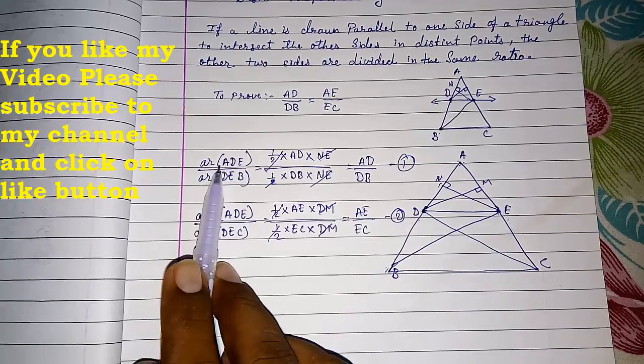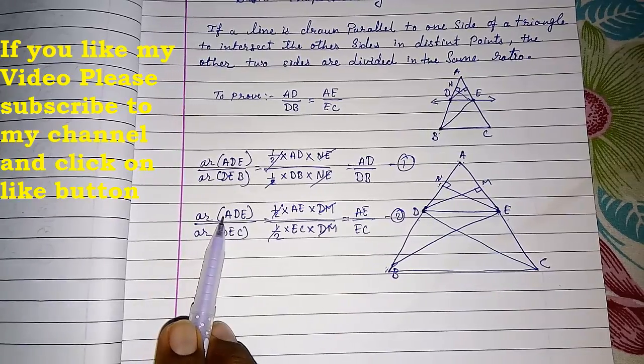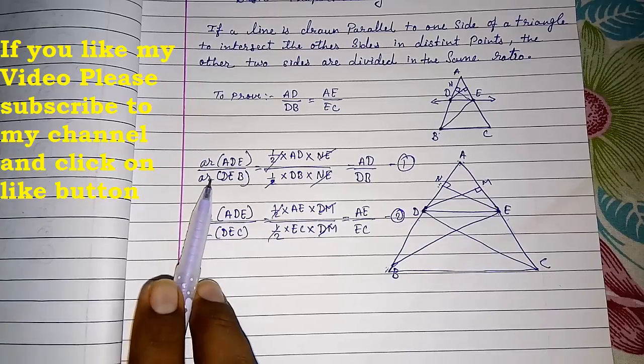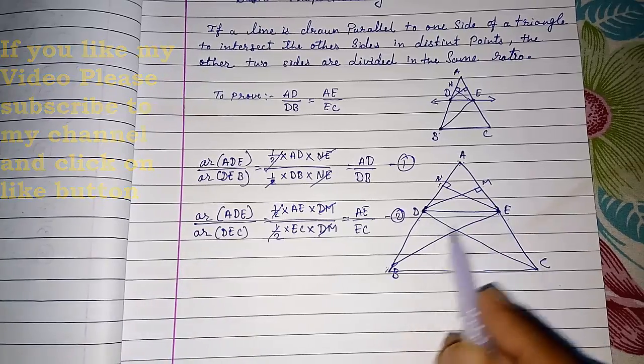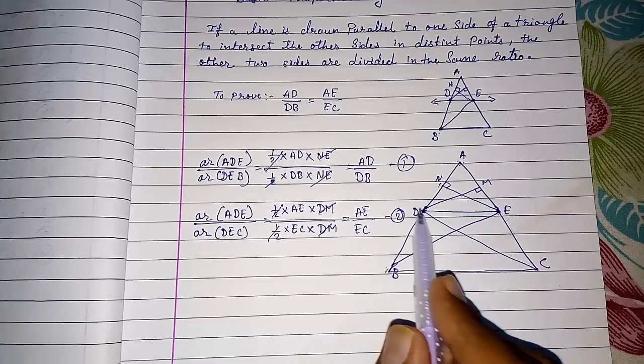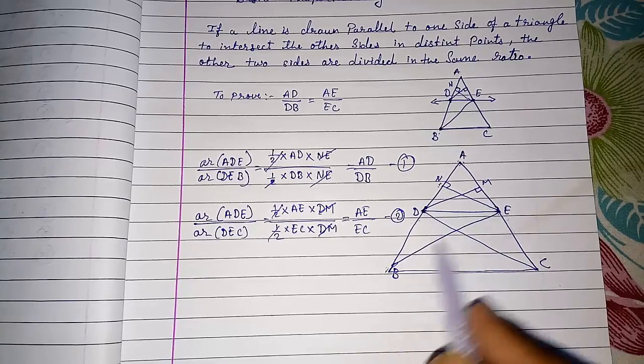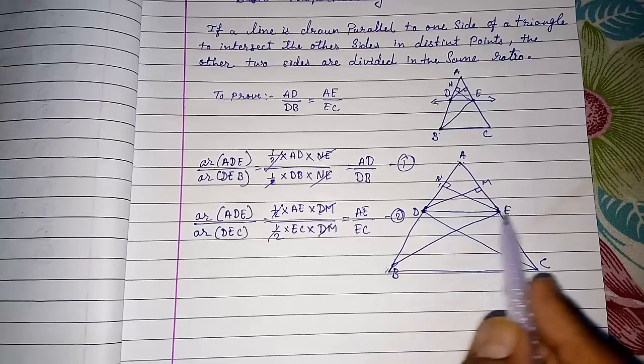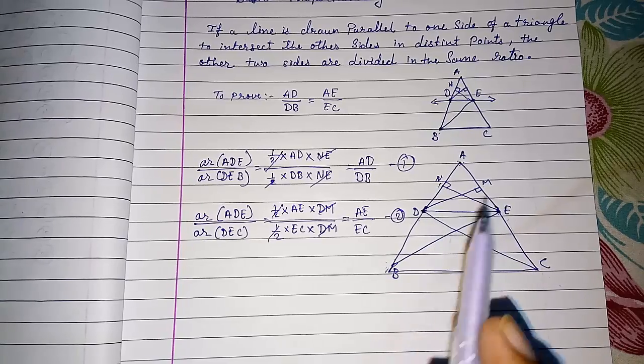Now look here. In numerator both the triangles are same only. But in denominator one is this triangle DEB and one is this triangle DEC. So can we say the area of these two triangles are equal, DEB and DEC? Yes.